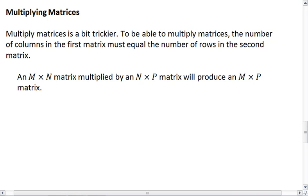When we multiply matrices together, one of the things we have to make sure about is that the number of columns in the first matrix must equal the number of rows in the second matrix. For example, an M by N matrix multiplied by an N by P matrix will produce an M by P matrix. I know that sounds really abstract, so let me make it a little bit more concrete.